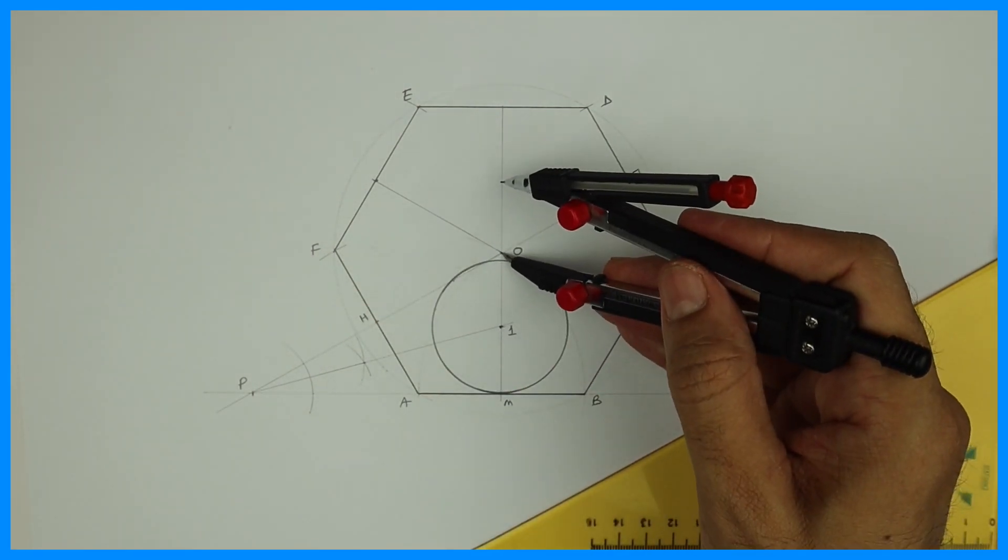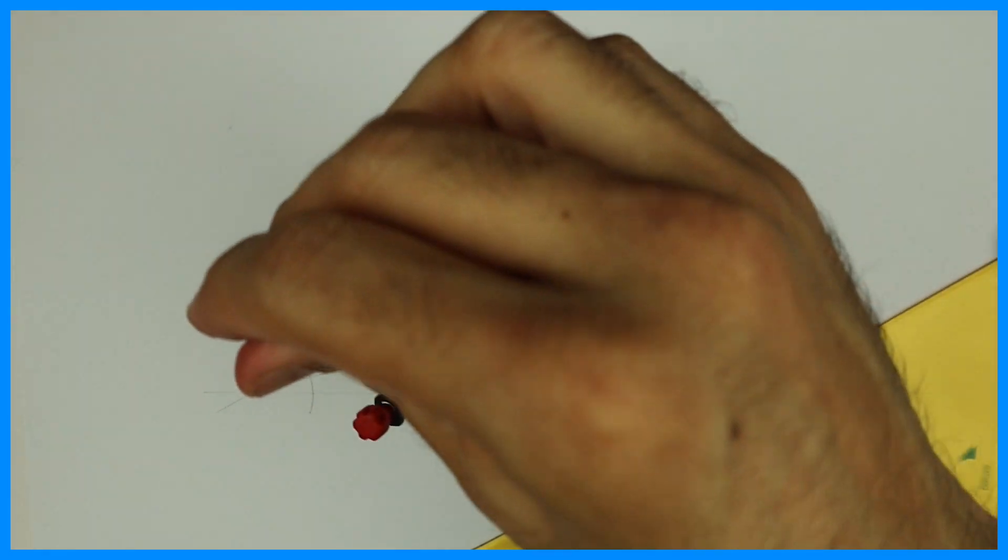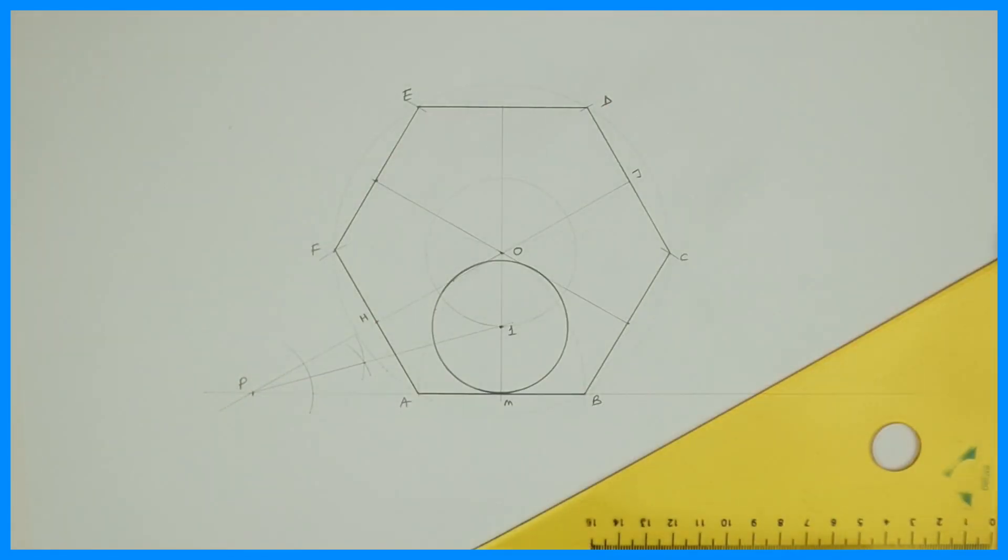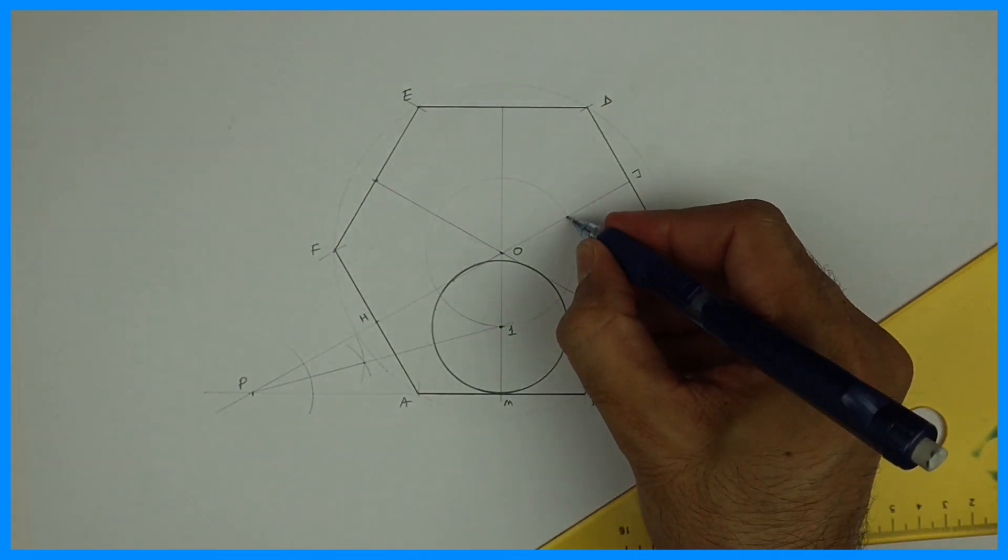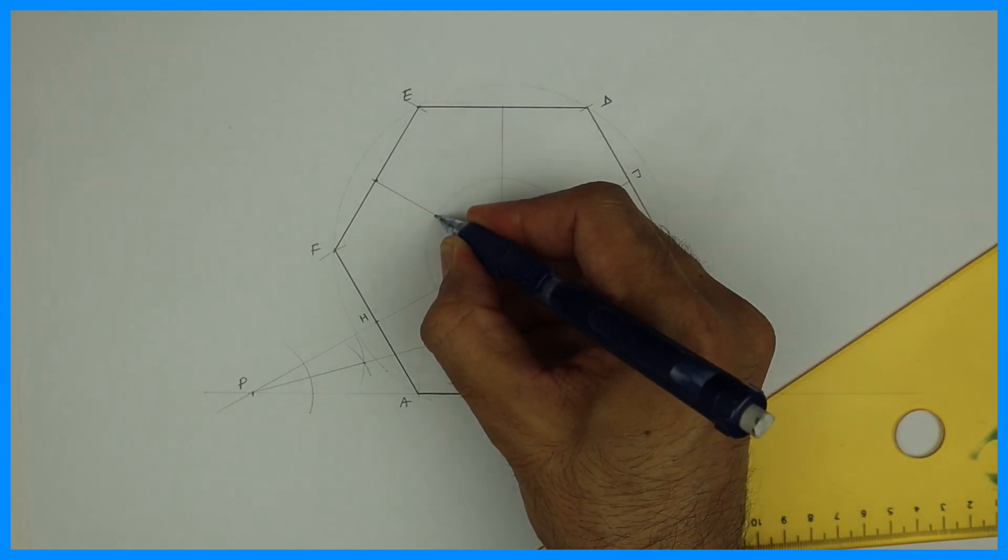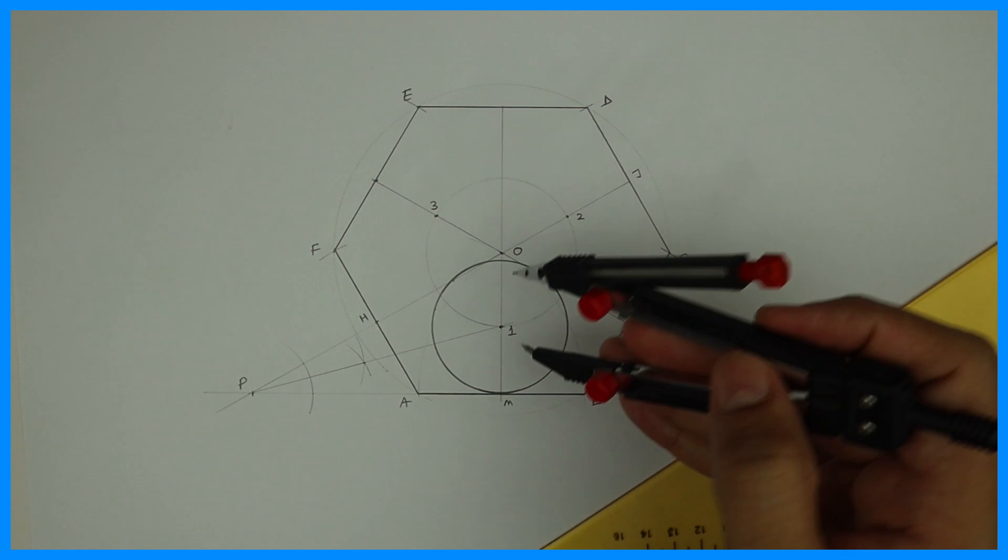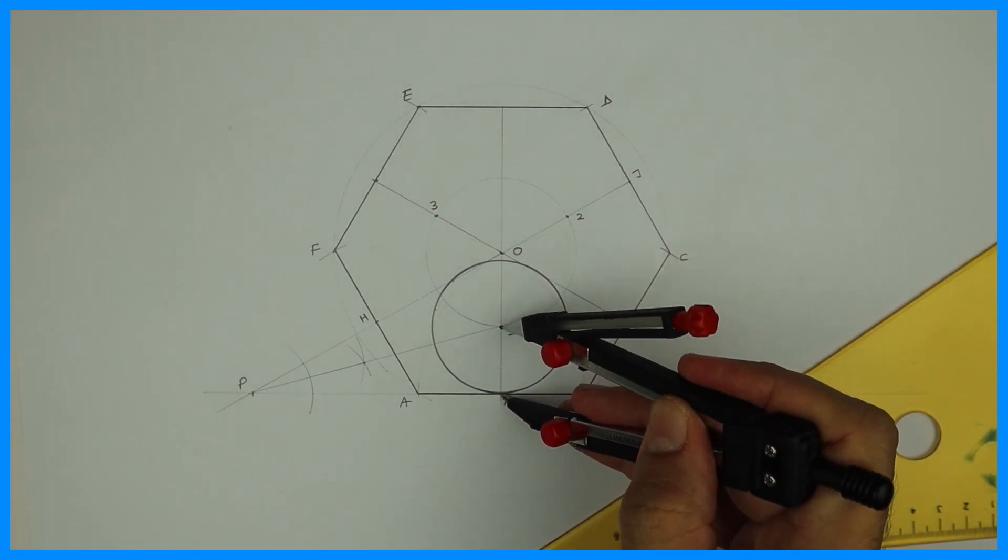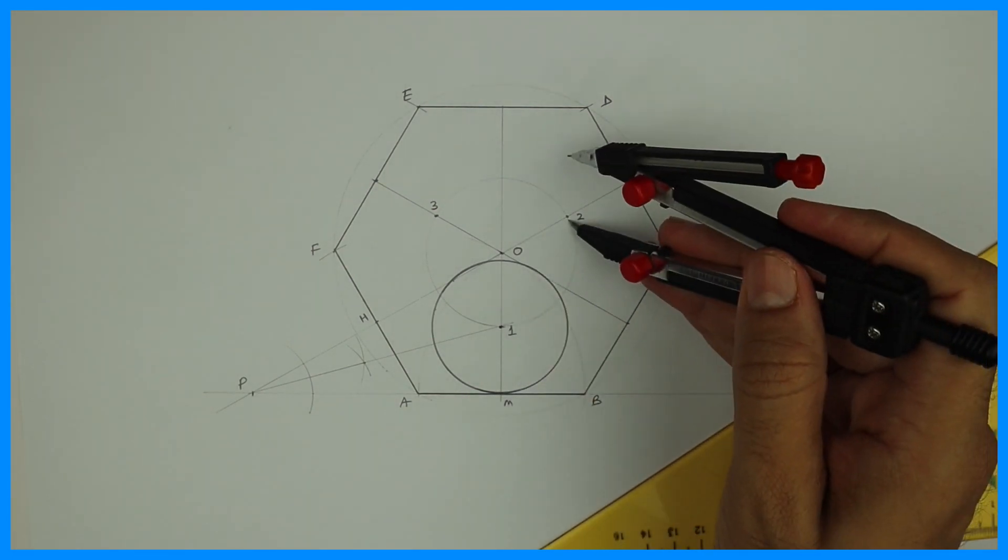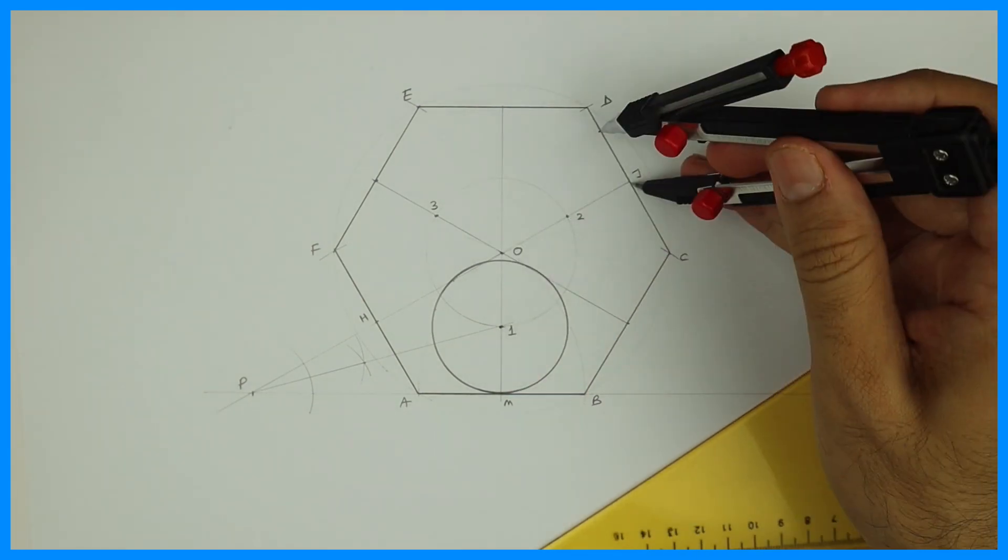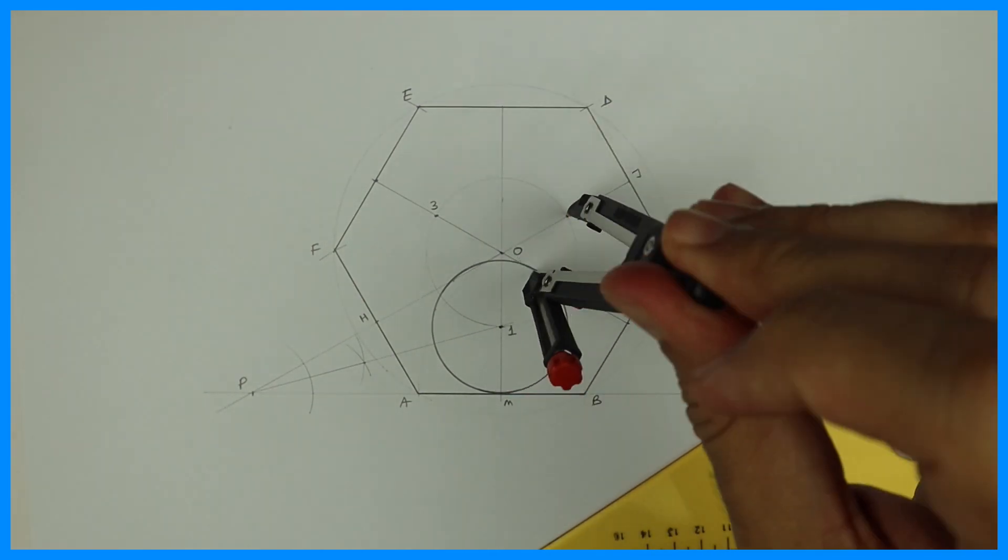After that, take the distance from O to 1 and draw a circle. This is transferring the distance, so we get points 2 and 3. Now take the same radius, 1 to M, and from points 2 and 3 draw circles.